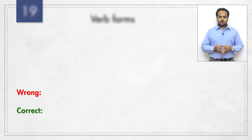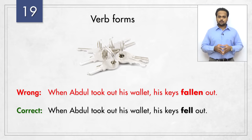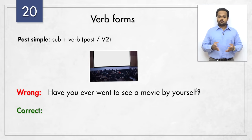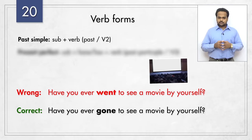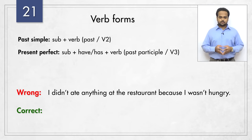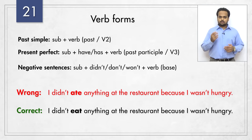Let's now talk about verb forms. Here's the first one – 'when Abdul took out his wallet, his keys fallen out.' The correction is 'his keys fell out.' In the past simple tense, you should use the past simple form – the second form of the verb, also called V2. Next sentence – 'have you ever went to see a movie by yourself?' The tense is correct but the verb form is wrong. 'Have you ever gone to see a movie by yourself?' is correct. In the present perfect tense, the past participle or third form V3 should be used. Number twenty-one – 'I didn't ate anything at the restaurant' should be 'I didn't eat anything at the restaurant.' In negative sentences after don't, didn't or won't, we must use the base form of the verb, not the past tense form.